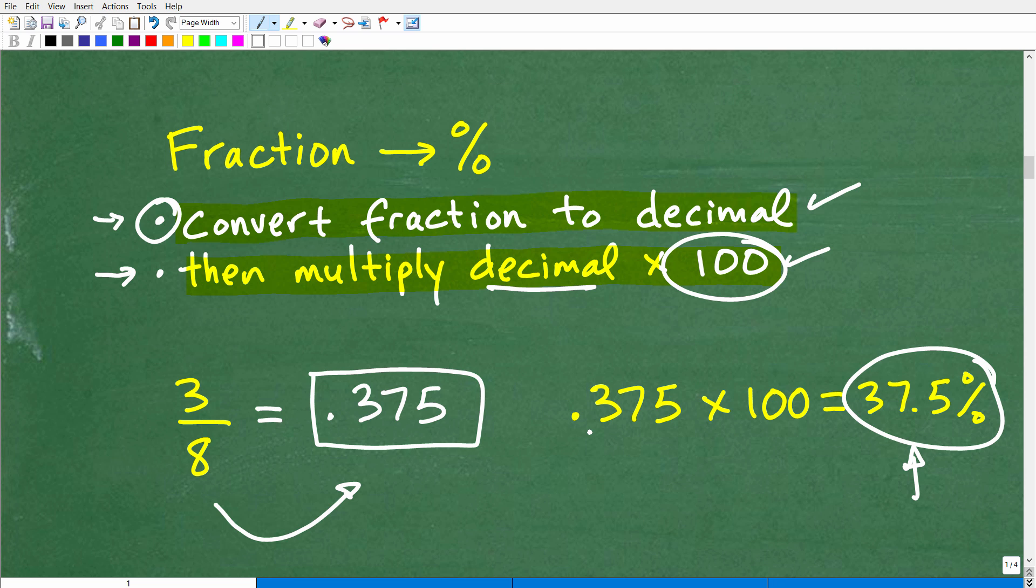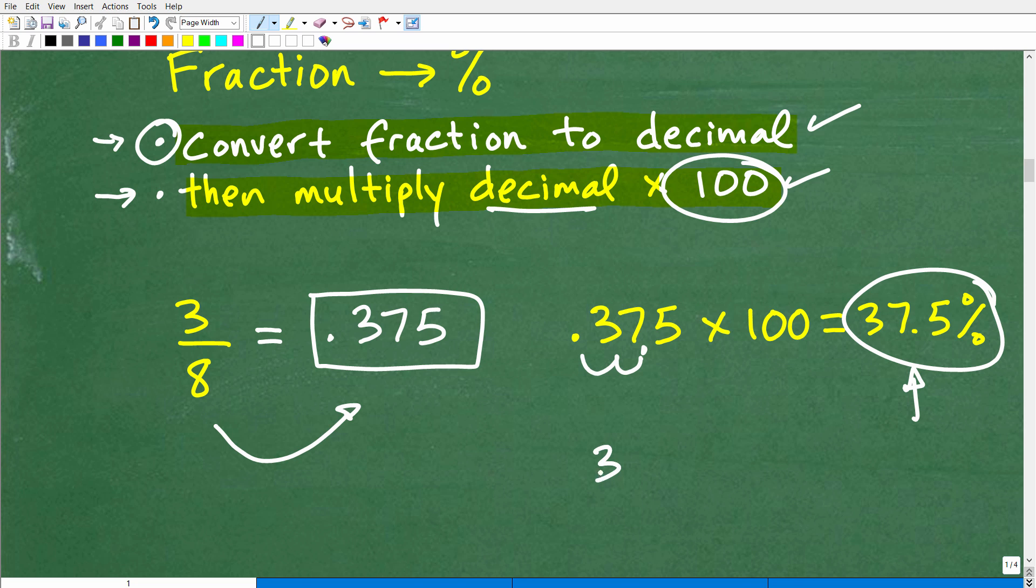But an easy way to go from decimal to percentage is also to move the decimal point over two places to the right. For example, we have 37.5% as our answer. If I wanted to express 37.5%, how do I go from percent to a decimal? You move the decimal point two places to the left, that's 0.375. But if I want to go from 0.375 back to percent, I move that decimal point back. Two places to the right is effectively what happens when you multiply by 100.